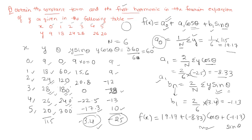I hope you understand this concept. Questions can ask a variety of things — if it asks for the second harmonic, you also take a₂ and b₂, adding a₂·cos 2θ + b₂·sin 2θ. Sometimes theta is given directly, making it easier, and sometimes the question asks for the coefficient of cos θ, which is a₁. I hope you've understood this topic — don't forget to like, share, and subscribe. Take care, bye bye.